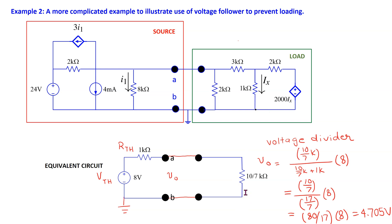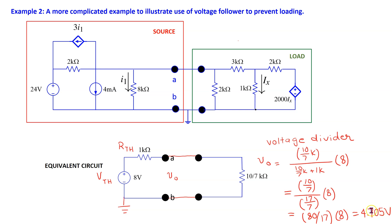If you are interested, links are provided at the end of this video showing how to find these Thevenin equivalent circuit values. Using the Thevenin equivalent circuit technique, we can draw an equivalent circuit for this source-load interconnection. From this simple equivalent circuit, it is very easy to show that the output voltage is 4.705 volts, which is less than 8 volts due to the loading effect.